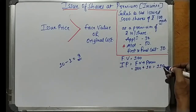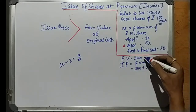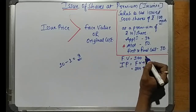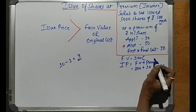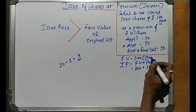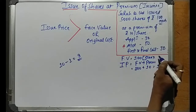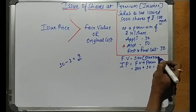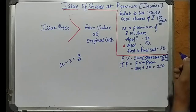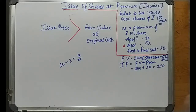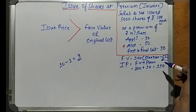So the issue price is 110. Face value is 100 rupees. The total requirement of capital is 5,000 shares into 100, which is equal to rupees 5 lakh.